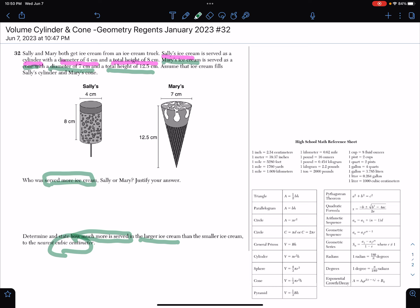We're trying to look for volume because volume is what takes up space and we're trying to figure out who has more ice cream. Let's first set up the formulas based on the reference sheet that's given in the back of the Regents packet.